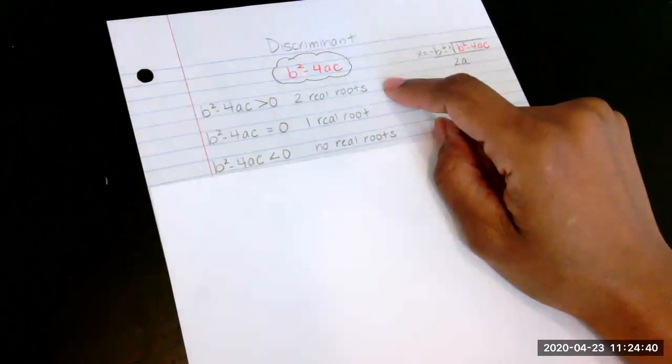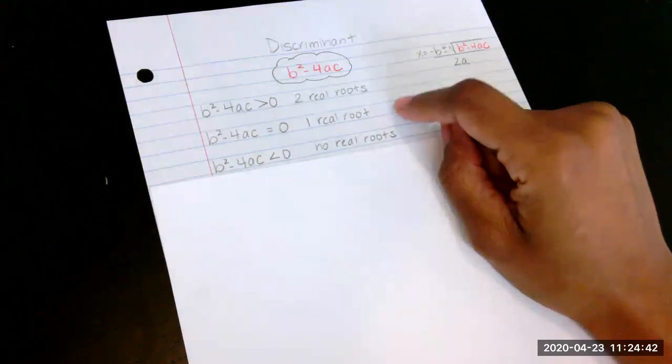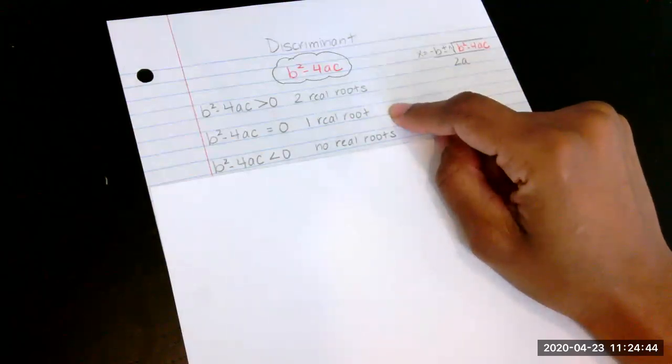That means it crosses the axis twice, x-axis two times. If you do b squared minus 4ac and you get zero, that tells you it has one real root, which means it crosses the x-axis once.